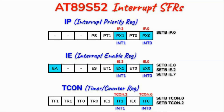Finally, we need to determine how the external interrupts are triggered through the external signal, which is done by programming the timer counter register. A logic 1 means interrupt 0 will be triggered by a trailing edge pulse, while a logic 0 means a low-level signal will trigger the interrupt. The same applies for interrupt 1. If we want to trigger both interrupts using a trailing edge pulse, these are the assembly instructions.